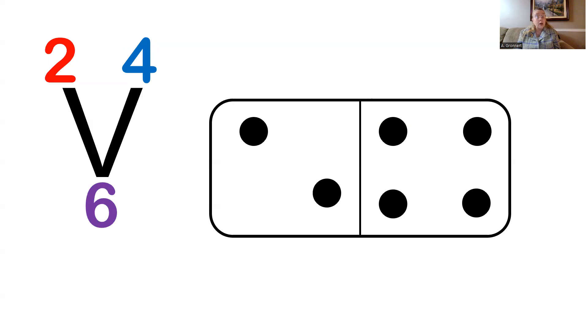You can see that when you look at the number tree that we made for this domino. Now how can I write my two related addition equations? The first one will say 2 plus 4 equals 6.